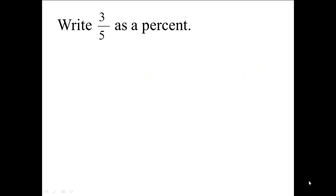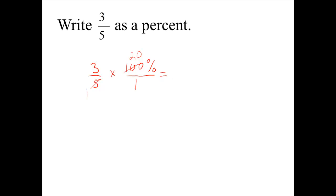Write 3 fifths as a percent. We will do this by multiplying 3 fifths times 100%, putting 100% over 1. We don't have any common factors in the denominators that would divide out the 3, but we do have a common factor of 5 in 100 and 5. So we divide: 100 divided by 5 is 20, and 5 divided by 5 is 1. We multiply 3 times 20 and get 60%, with 1 times 1 in the denominator, and anything divided by 1 is itself.